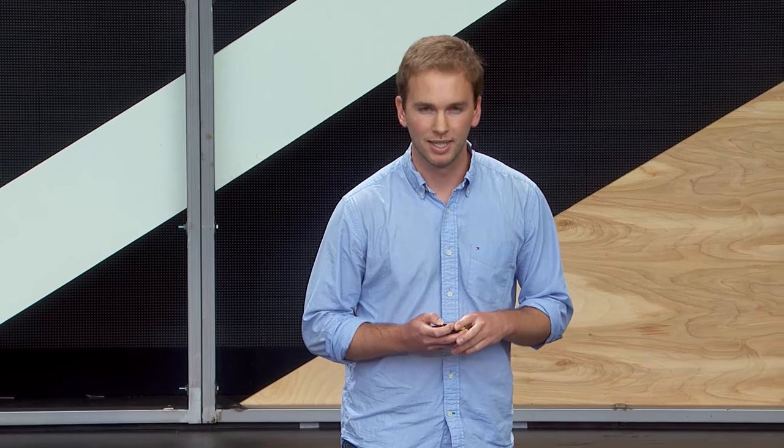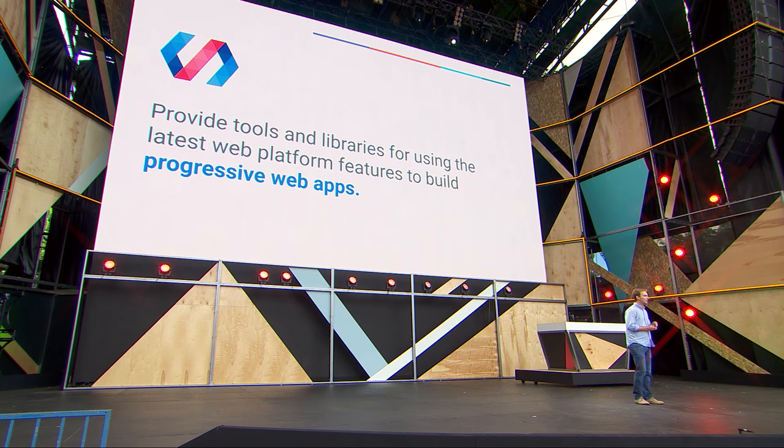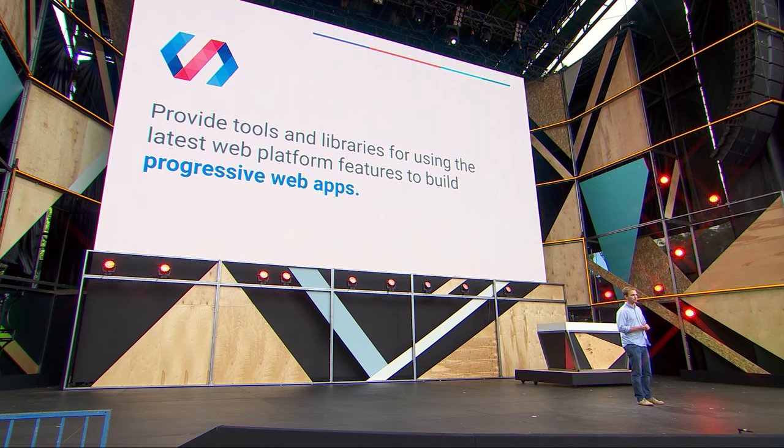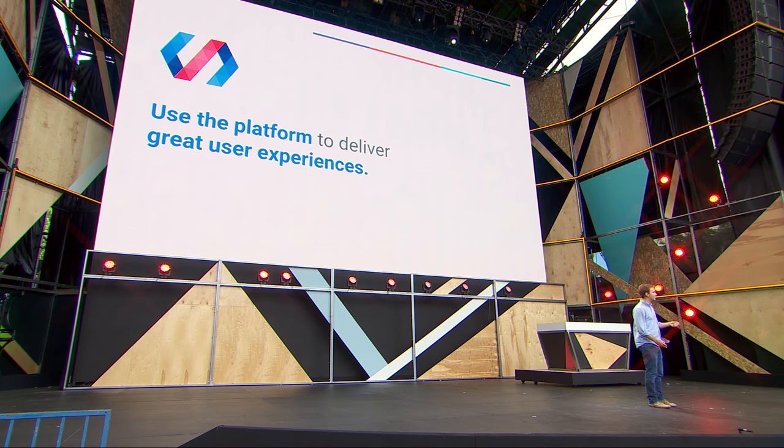And if you've been following web development, or if you were at the talk that came right before mine, you know that the next generation of web apps are here, and they're called progressive web apps. So the Polymer project's mission is to provide tools and libraries to make it easy to use these latest web platform features to build progressive web apps. Let's make it more concise: the Polymer project's mission is to use the platform to deliver great user experiences.